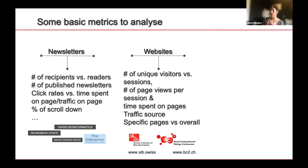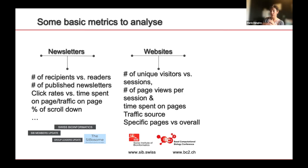For newsletters, basic metrics include the number of recipients versus the number of openings — the opening rate — as well as click rates and time spent. If you just look at click rates, that gives you an interesting figure, but if you don't compare it to the time spent on the pages where the news is, people may have clicked and exited directly. So it's important to look at both figures. You can also check the percentage of scroll-down, though this is only possible if the newsletter is opened in the browser.